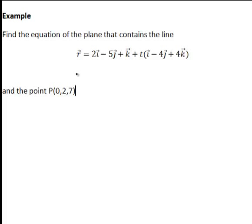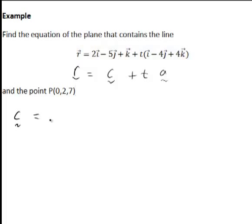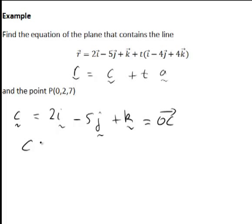Looking at the equation of the straight line first, it is of the form r equals c plus t times a, where c is the position vector of a point on the line. So the first part is c, which is 2i minus 5j plus k. Therefore, point C on the line has coordinates (2, -5, 1).